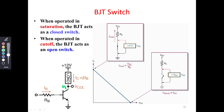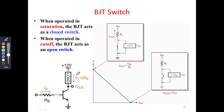This is the N region, the collector region, and to this we are providing a positive voltage, so it is already reverse biased. During this reverse bias condition, the transistor is working in the cutoff region. In the cutoff region, IB equals 0, and since IB equals 0, IC also equals 0, because the transistor acts as an off switch position.